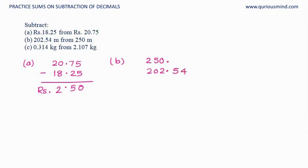We want two digits here because there are two digits after the decimal point, so we will add those two zeros and do the subtraction. The decimal point goes below it. 47.46 meters is the answer, so the result is 47.46 meters.